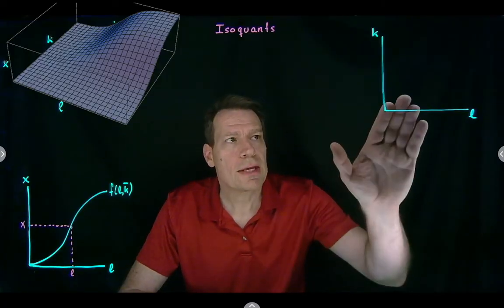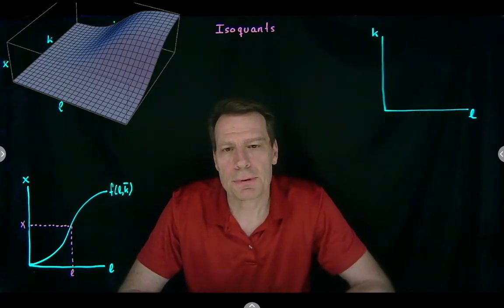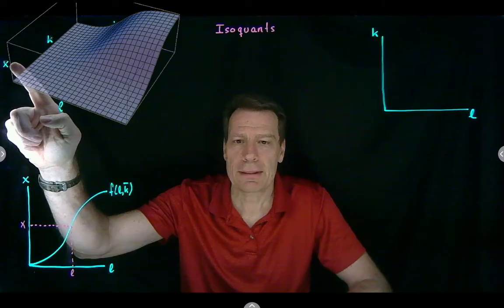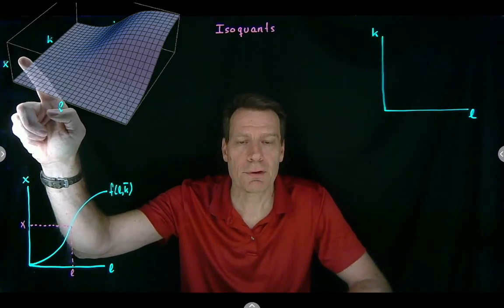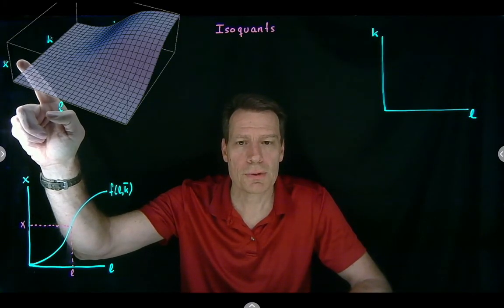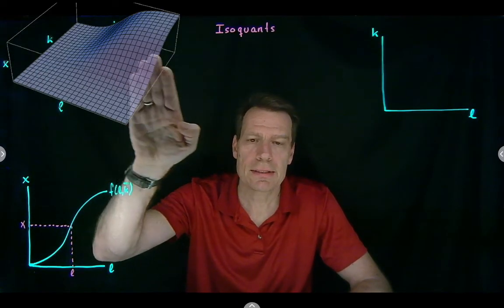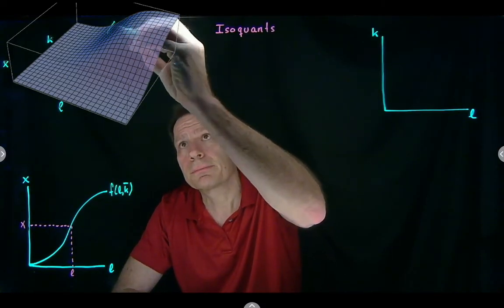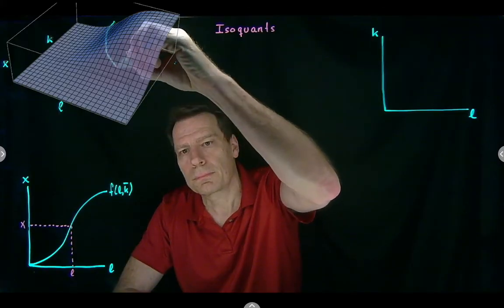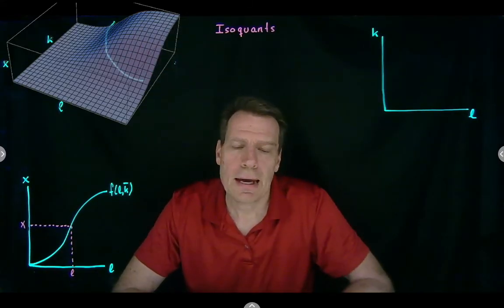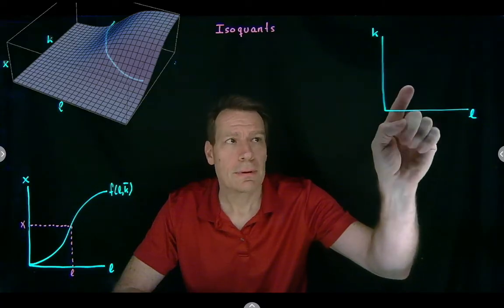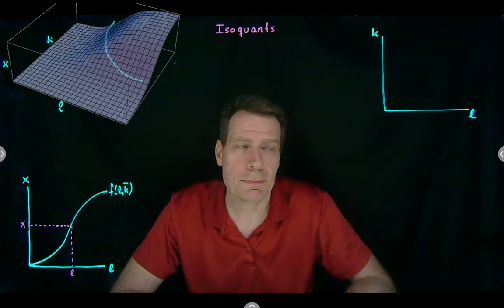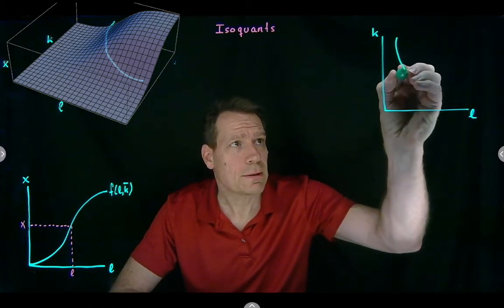So how do we represent the input bundles that produce the same level of output in this graph? We go to our production function, we go to the height on the vertical axis that represents the level of production we're interested in, and then we take a horizontal slice of this function. When we take that and project it down into the lower plane in this three-dimensional graph, we get something that looks like this.